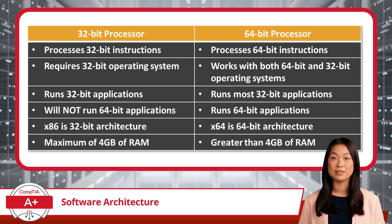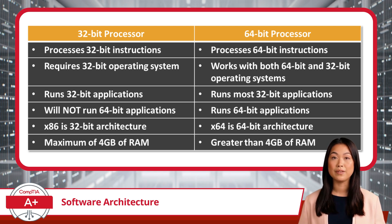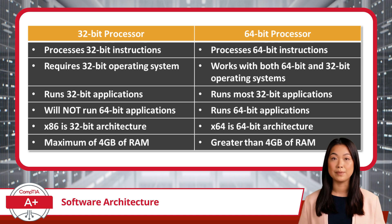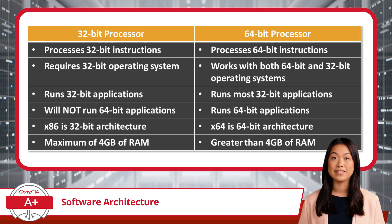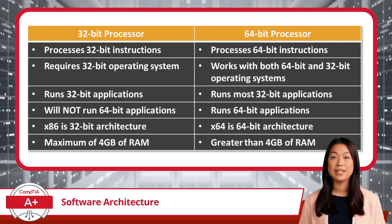This trickles down a little further, with the same arrangement holding true for applications. A 32-bit operating system is capable of running a 32-bit application, while a 64-bit operating system is capable of running 64-bit applications and most 32-bit applications.